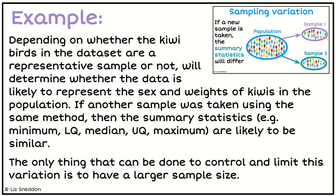The last source of variation is sampling variation. We need to think about what happens if we take another sample — is the dataset a representative sample, a biased sample, or a random sample? We want to know whether our summary statistics would be similar if we took a similar type of sample. We can't really control sampling variation — the only way to eliminate it is to collect data from the entire population, which isn't possible for all kiwi birds. Taking a larger sample size will help reduce this variation.